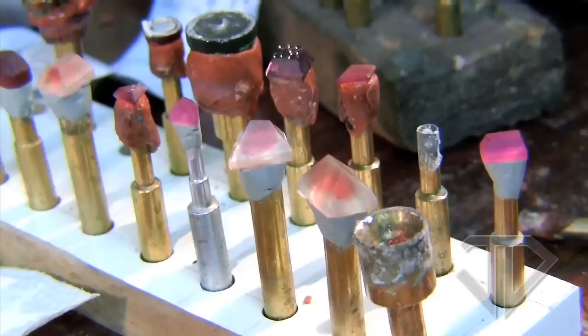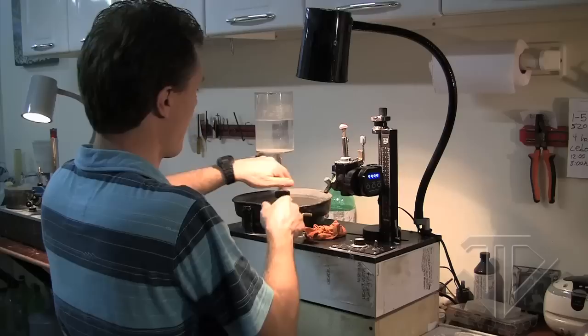The gem is glued to a dock. The dock is a cylinder which is set into the faceting machine and holds the gem in place.